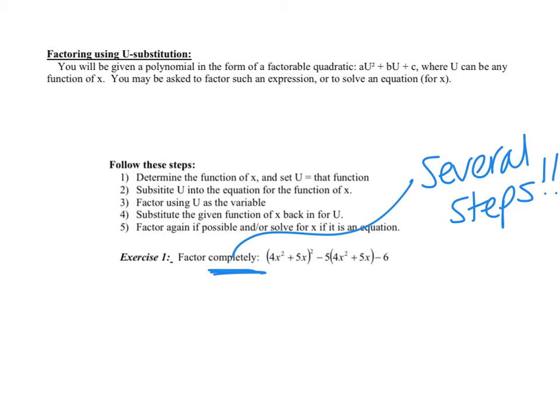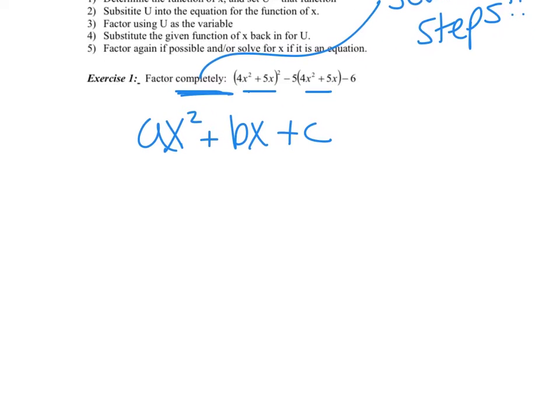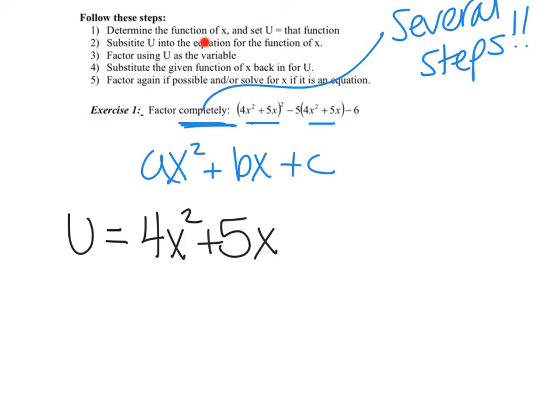Because this doesn't look like my normal ax squared plus bx plus c, I notice I need a u substitution. I have some quantity I'm squaring in place of my x. Here's how we tackle this. We're going to say let u equal 4x squared plus 5x. That was step one. Now, substitute u into the equation. So, I'm going to say this is really u squared minus 5u minus 6.